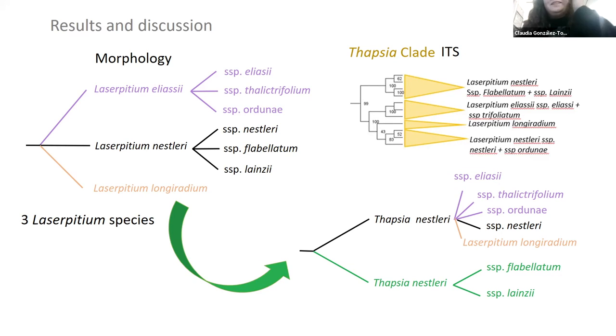And another unsupported clade, we cannot explain yet, which comprises two subspecies of Laserpitium elaeosalinum, which are known to inhabit just the north of the Iberian Peninsula. So we have two Thapsia species, we believe, instead of three.